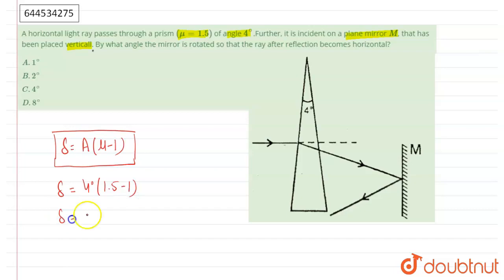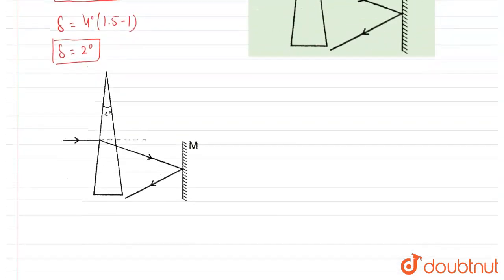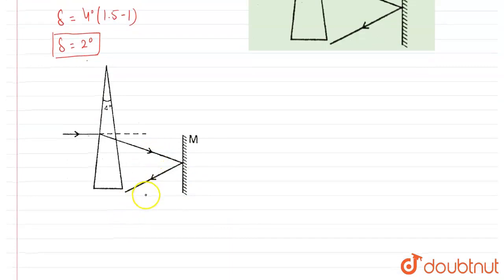So we will get a deviation angle of 2 degrees. In that condition we can see that the deviation angle of the ray is 2 degrees, so in that condition the angle of incidence at the mirror is also 2 degrees.